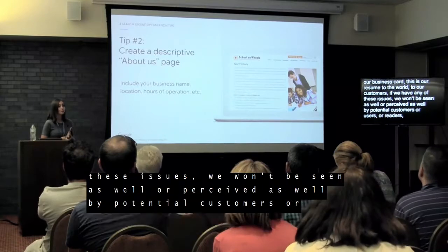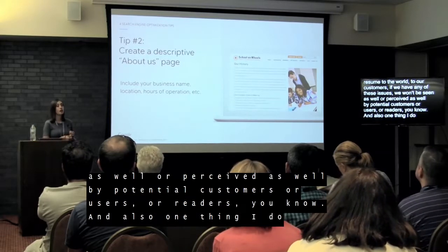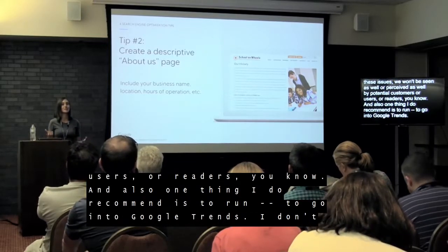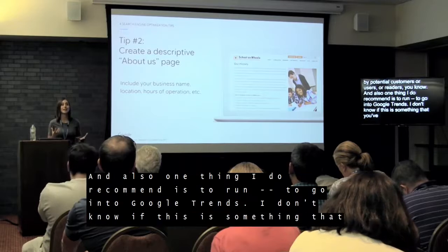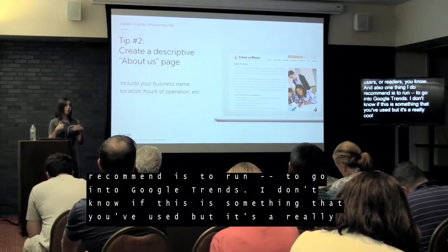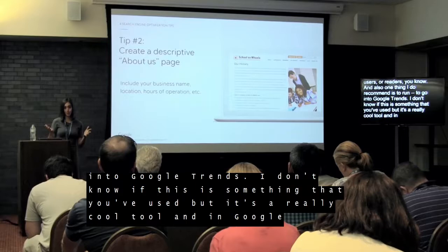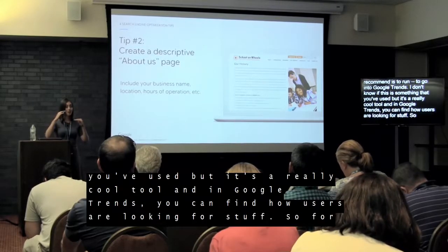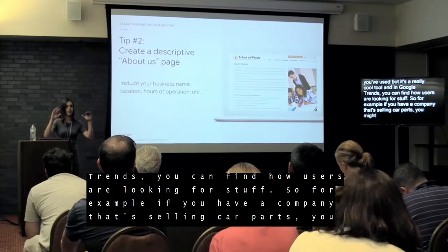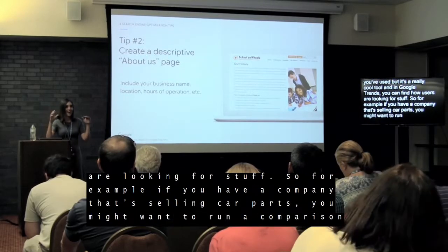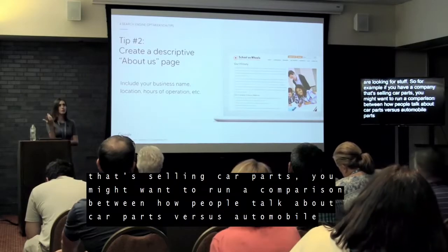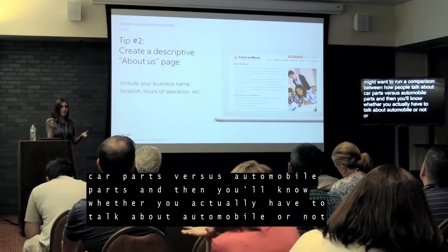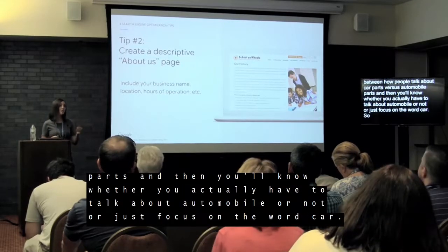I also recommend using Google Trends. It's a really cool tool where you can find how users are searching for things. For example, if you sell car parts, you can compare how people search 'car parts' versus 'automobile parts' — then you'll know which term to focus on. Google Trends can be a really, really useful tool.